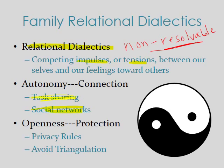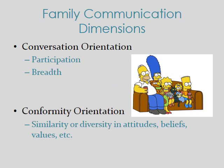For now, you should know what a dialectic is, understand the two primary dialectics in family communication—autonomy and connection, and openness and protection—understand what those mean, and know a few strategies for managing them, which I've discussed over the last few minutes.